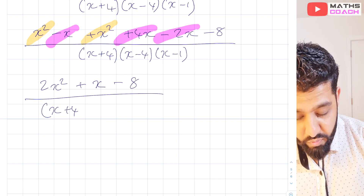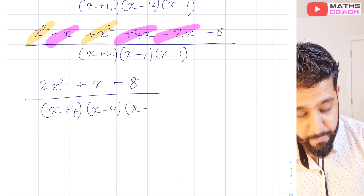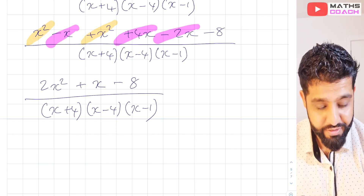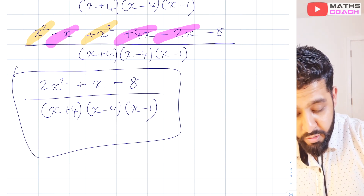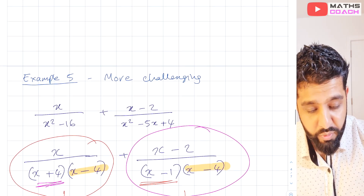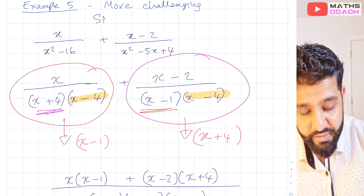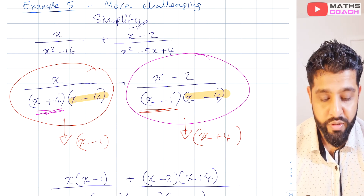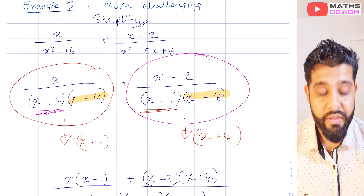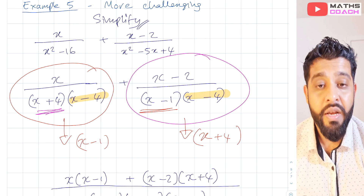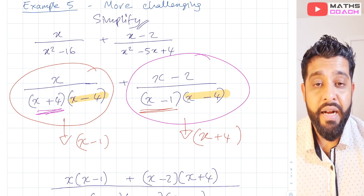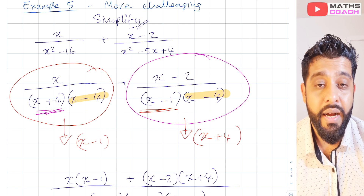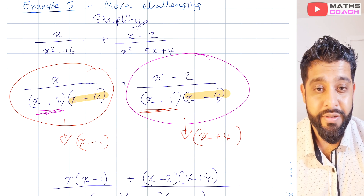Our final answer is (2x squared plus x minus 8) over (x plus 4)(x minus 4)(x minus 1). This is the simplified form of the original expression. Typically the question will ask you to simplify. I hope you've enjoyed that lesson — the next lesson will be on multiplying and dividing algebraic fractions, so stay tuned.